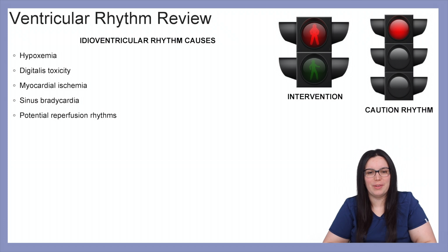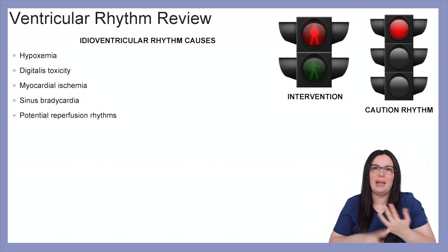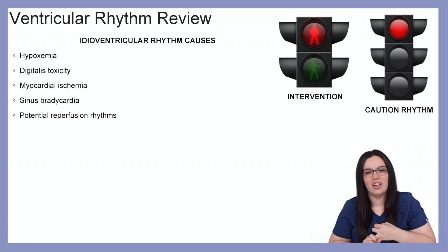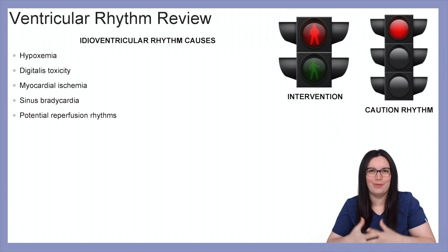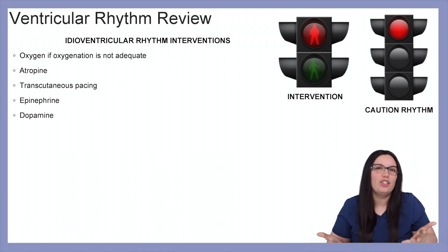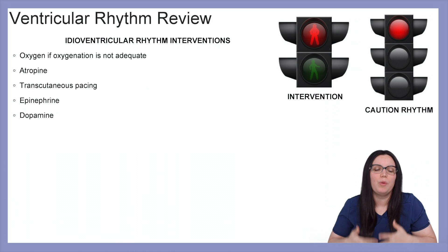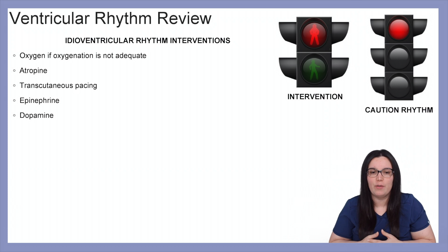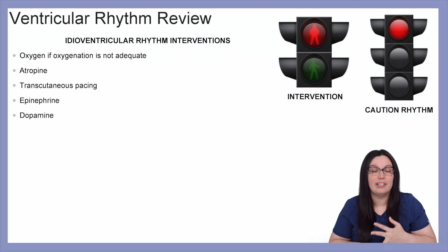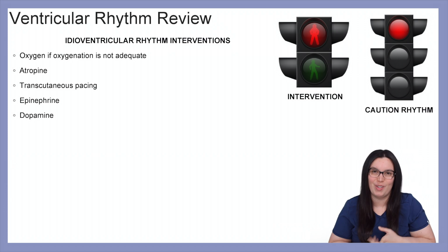Causes for our idioventricular rhythms include hypoxemia, digitalis toxicity, myocardial ischemia, sinus bradycardia, and potential reperfusion rhythms. Interventions: we want to provide oxygen if oxygenation is inadequate — less than 94%. We want to get atropine, we can consider transcutaneous pacing, epinephrine, and dopamine.